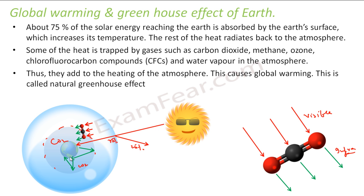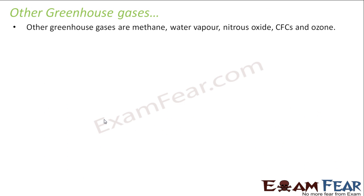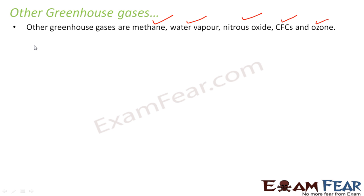You know what happens with global warming? The polar ice caps melt and the coastal areas are submerged in water, causing a lot of problems. The overall temperature of the earth increases. There are other greenhouse gases apart from carbon dioxide — CO2 is the major one. The others are methane, water vapor, nitrous oxide, and CFC (chlorofluorocarbon). These also contribute to the greenhouse effect.